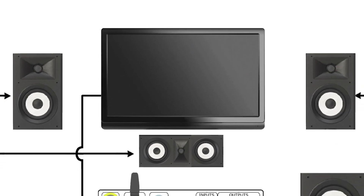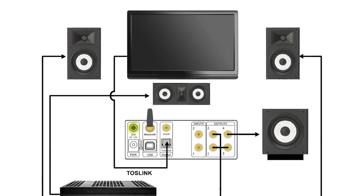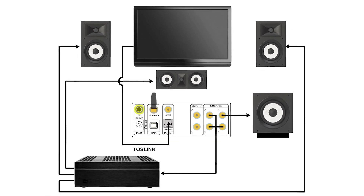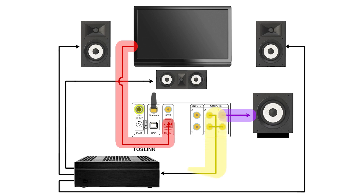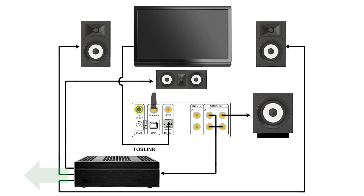From the TV, high-definition audio is output in PCM digital audio over Toslink fiber optic into the Flex. This provides a pure digital stereo signal that is then processed into the 3.1 channels. Set up your system as shown, and be sure to verify your connections as follows: Toslink from TV to Flex, RCA cable from Flex to subwoofer, RCA cables from Flex to 3-channel amplifier, and speaker wire connections from the 3-channel amplifier to left, right, and center speakers.